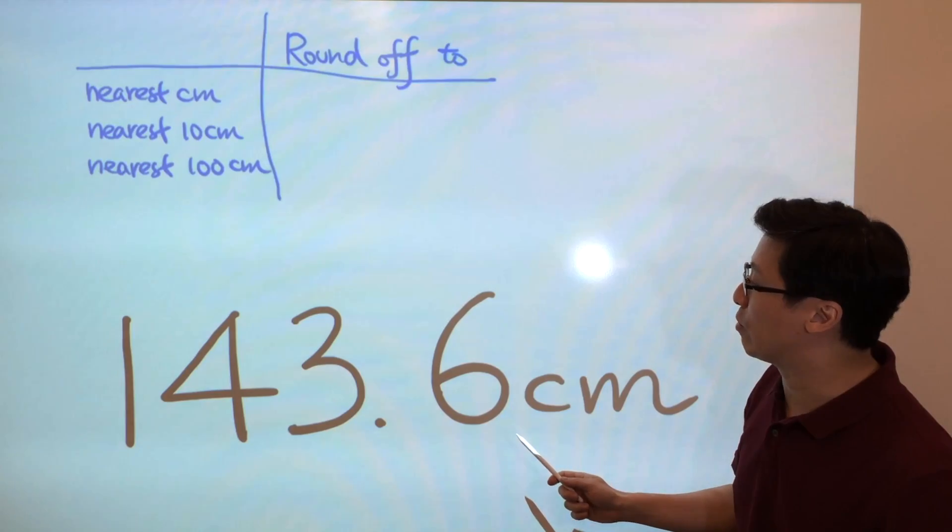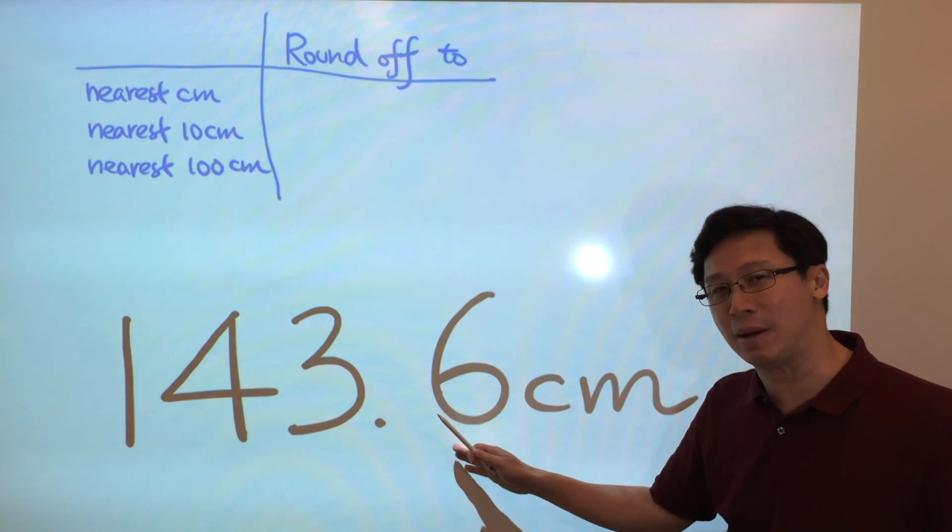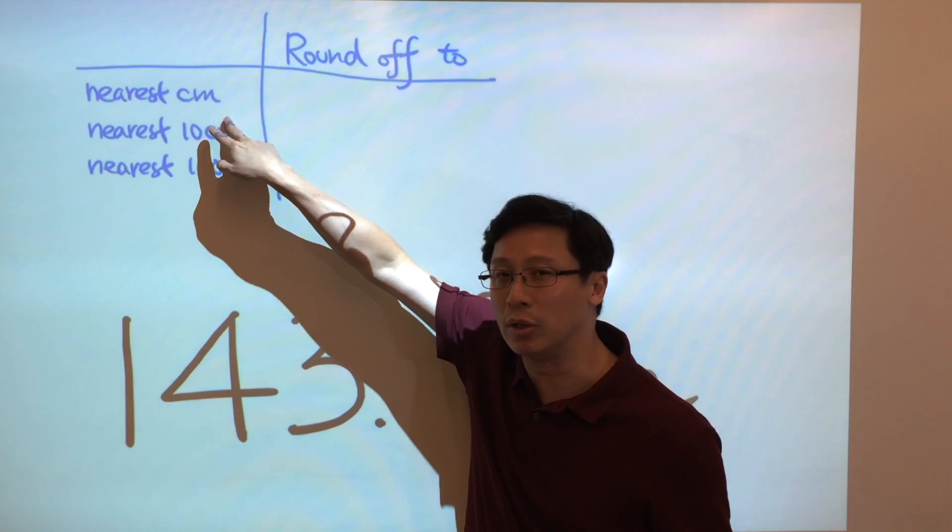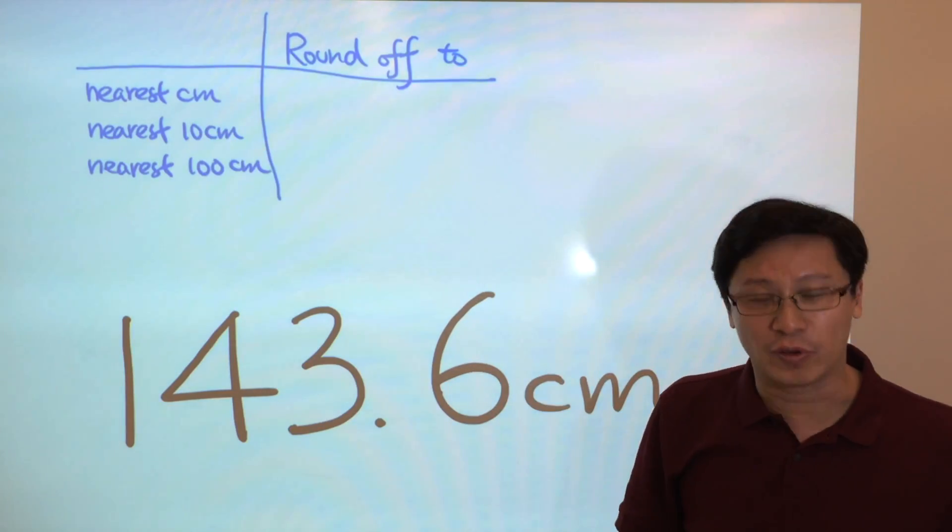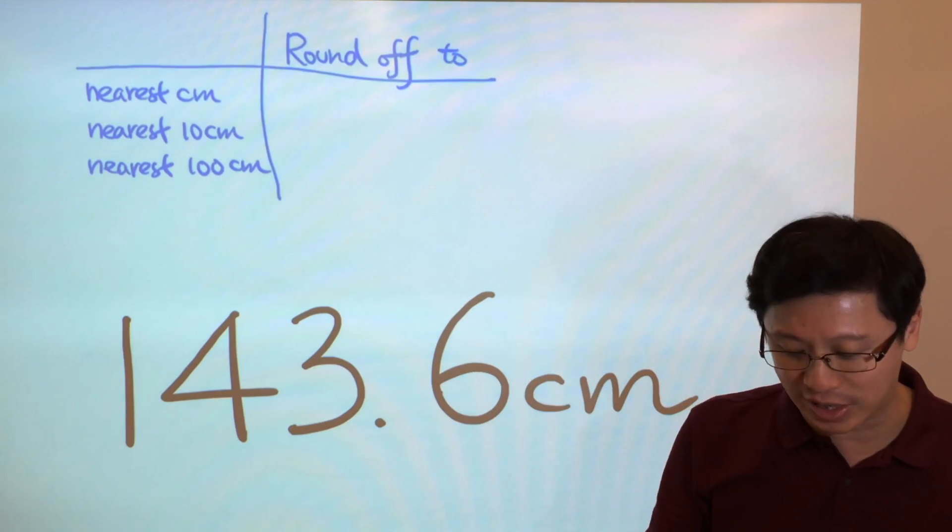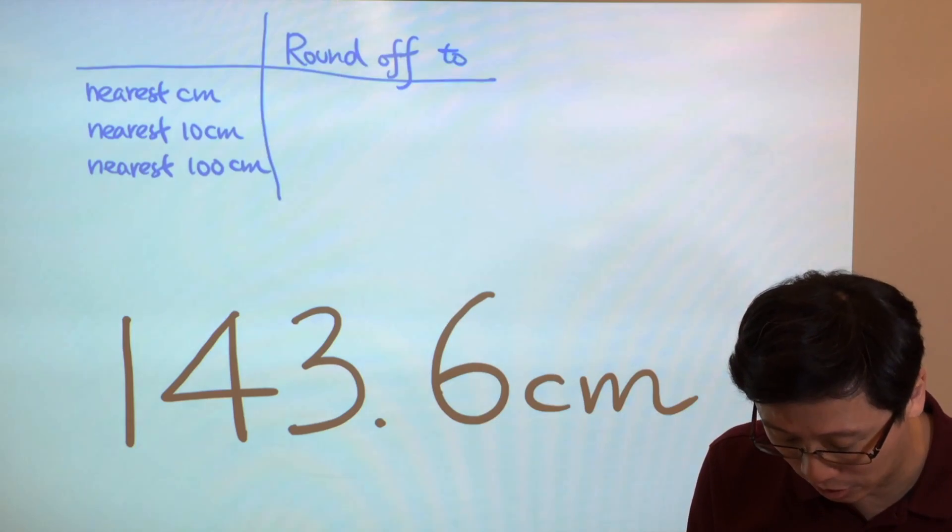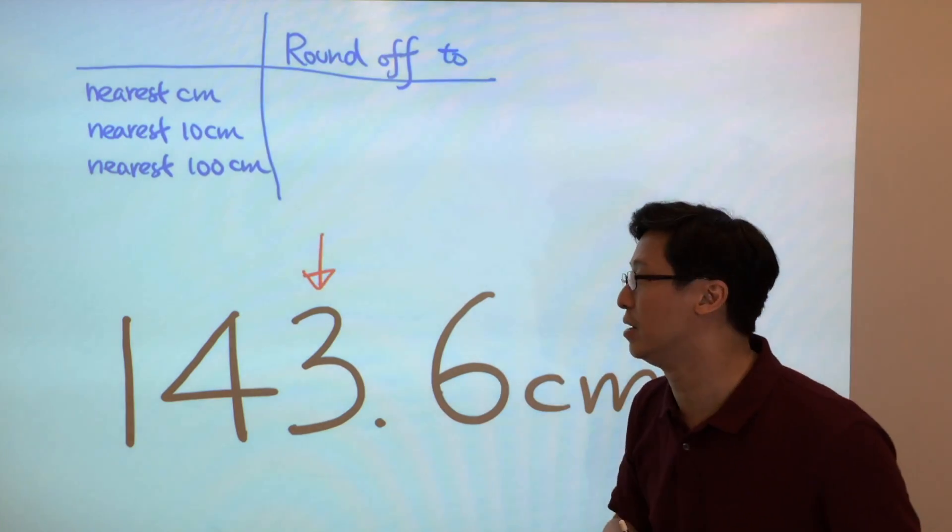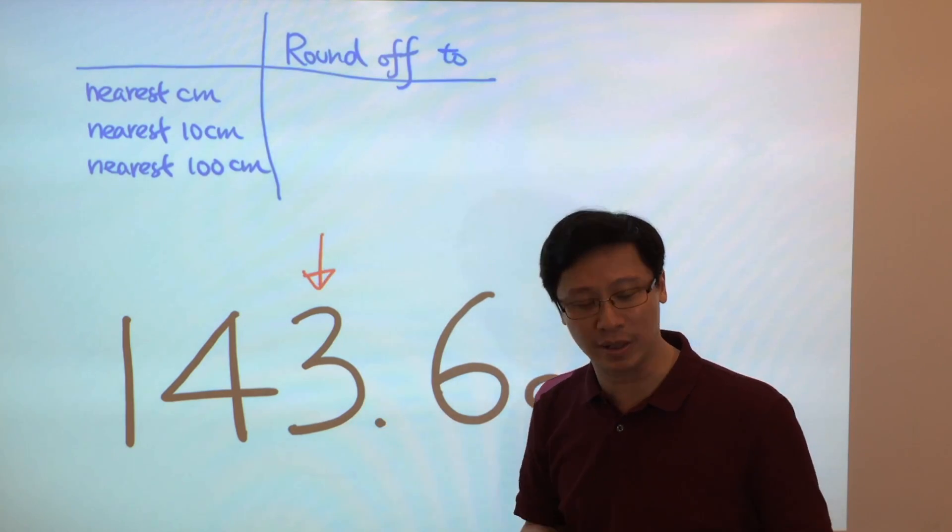So we want to just find the estimate of this number. Round off this number to the nearest cm. For nearest cm, that means we just come to the cm position, the unit place, which is 3 cm in this case.